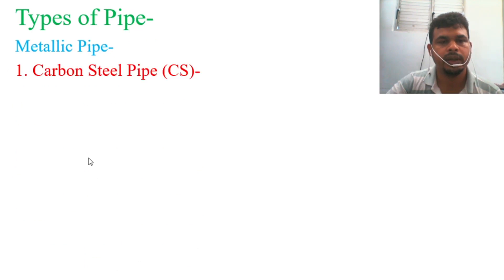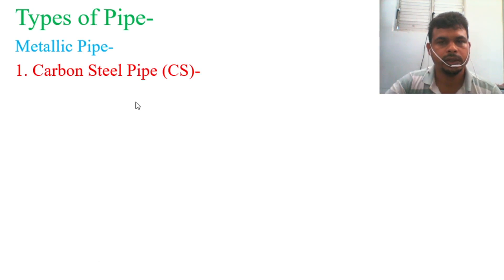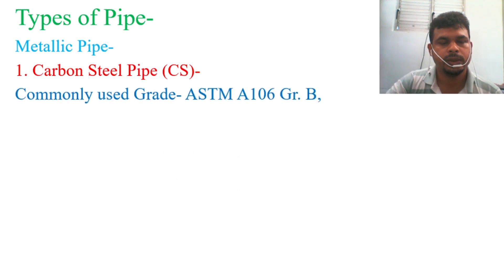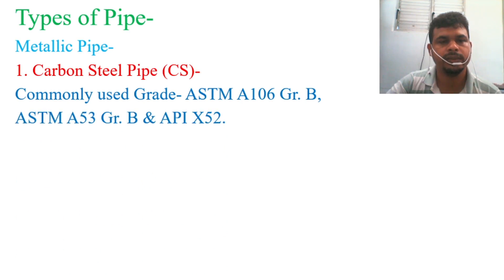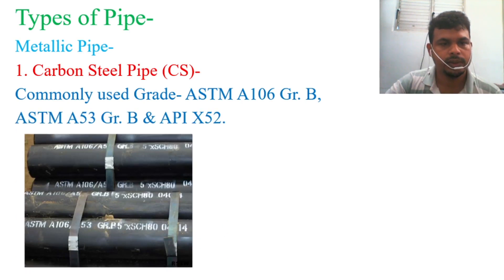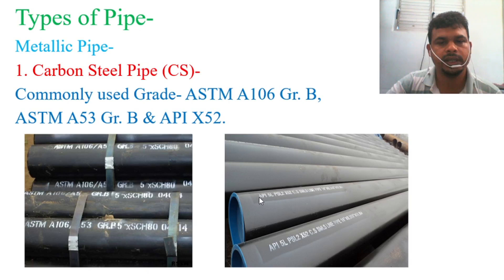Metallic pipe is commonly used in oil and gas, shipping industries, power plants, and other areas. The first type I will cover is carbon steel pipe — short form CS. Commonly used grades include ASTM A106 Grade B, ASTM A53 Grade B, and API 5L X52. You can see from the photos that the pipe body has markings such as ASTM A106, A53 Grade B, and API 5L PSL X52. If you see this type of writing on the body of a pipe, you will be able to identify it as a carbon steel pipe.